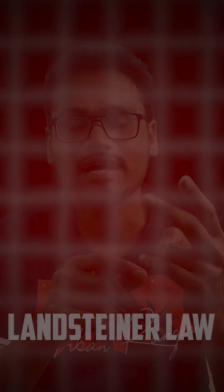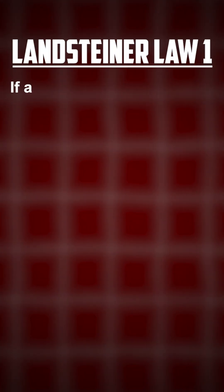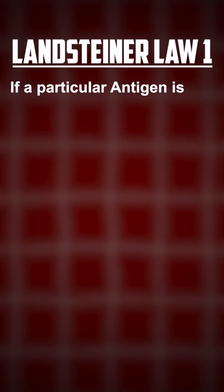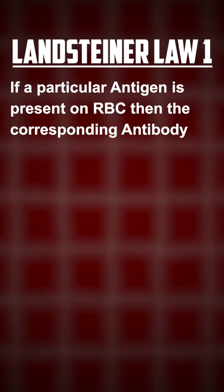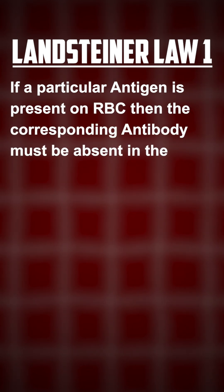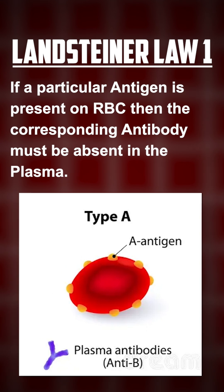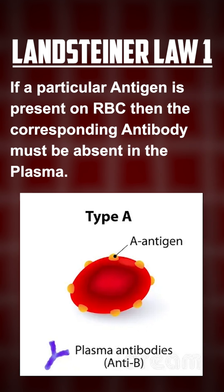This law has two parts. The first part says that if a particular antigen is present in an RBC, then the corresponding antibody must be absent in the plasma. It is very logical. For example, if the RBC has the A antigen, then the plasma should not have A antibodies — otherwise it will cause clumping of the blood and the person would not survive.